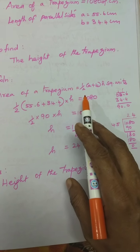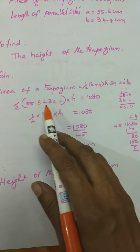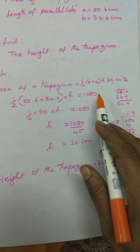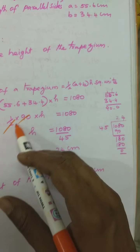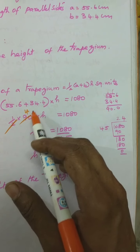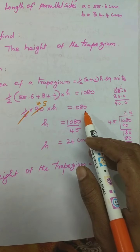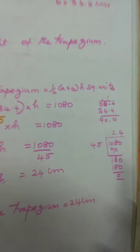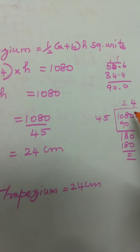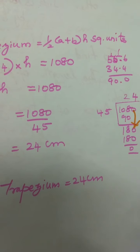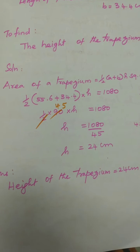Solution: area of a trapezium is equal to 1 by 2 into A plus B into H square units. Substitute A and B — adding 55.6 and 34.4 gives 90. You cancel the 2 and 90 to get 45. So 45 into H is equal to 1080. Divide 1080 by 45: 2 times 90, subtract 180, bring down 0 gives 180, that is 4 times. Height is equal to 24 cm. Height of the trapezium is equal to 24 cm.